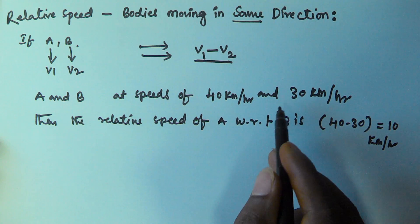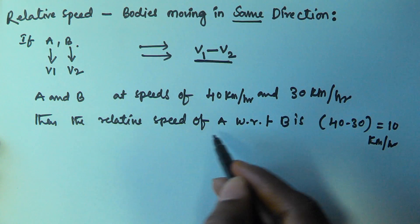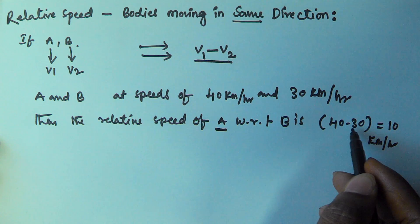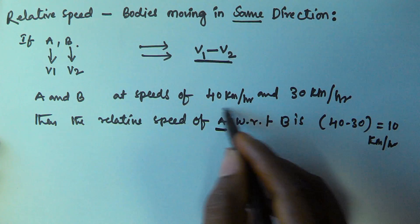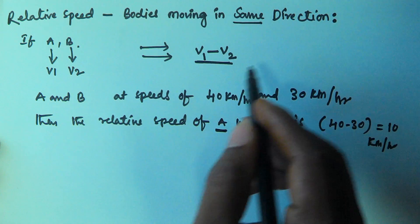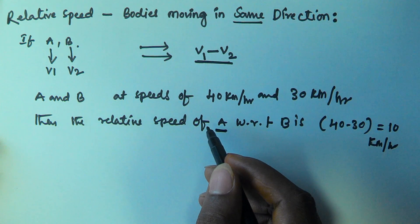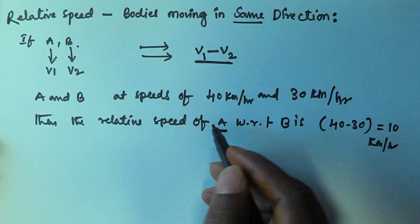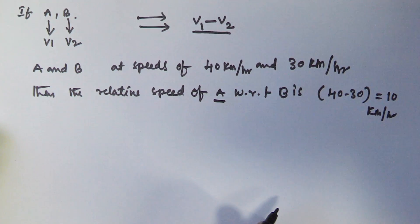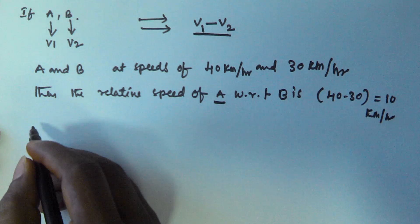The relative speed of A with respect to B is 40 minus 30. The difference — if both objects are moving in the same direction, the relative speed is the difference of the speeds. Let's see one example based on this.